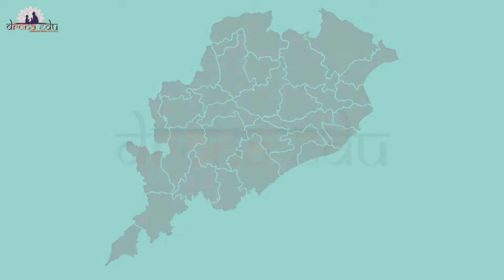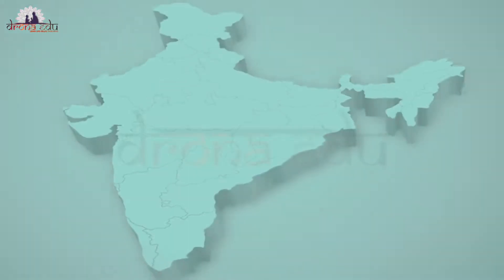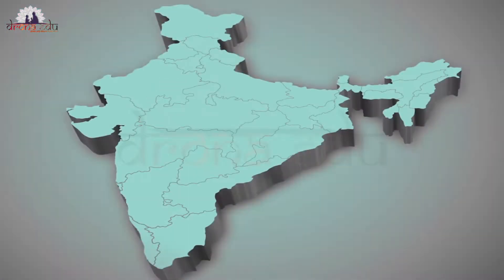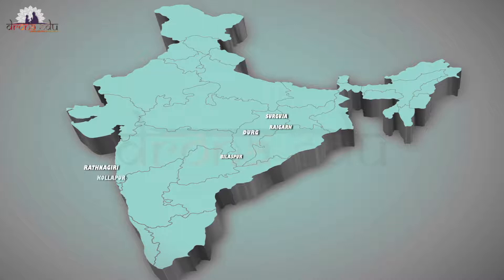Bauxite ore is also found in Bilaspur, Durg, Surguja and Raigarh in Chhattisgarh, and Ratnagiri, Kollapur, Thana and Satara in Maharashtra.